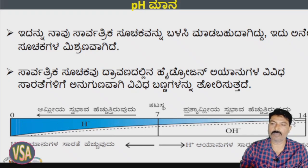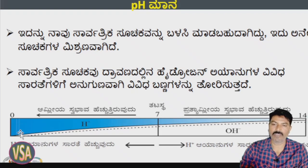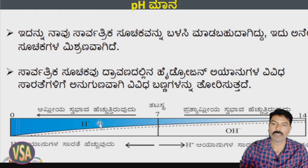In this case, pH is a measure of H+ ion concentration. The universal indicator is a high-level indicator for H+ ions. Now let's talk about the H plus ion.